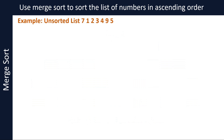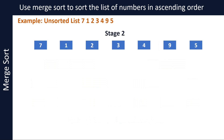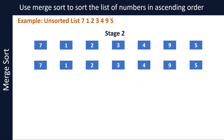In the second stage, we will repeatedly merge pairs of sublists, putting items in the correct order before merging, to form new sorted sublists. Let's start by merging the sublists which contain seven and one. Since seven is larger than one and we want to sort in ascending order, we swap seven and one before merging so that they are in the correct order.